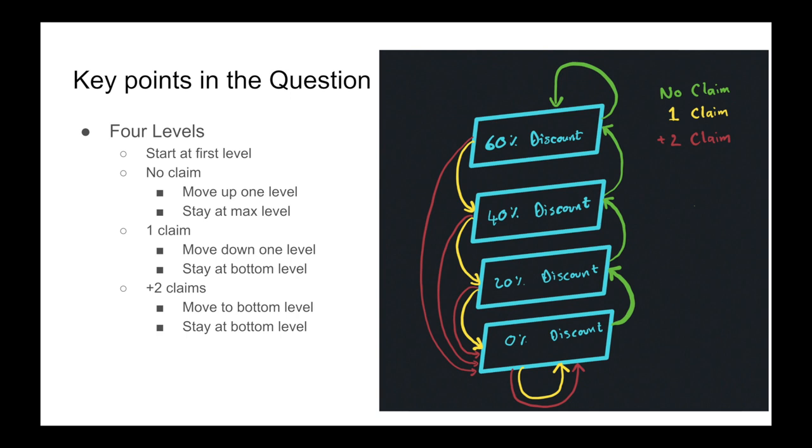And it's important to note that quite a few students forget to have the state that goes back to its own state. So they sometimes omit the fact that if there's no claim, the 60 doesn't come back to it. And they omit the idea that if you're at zero, you don't go back to zero. And then you'll see that you've done something wrong, because then all your probabilities will not sum to one.